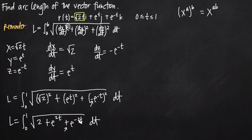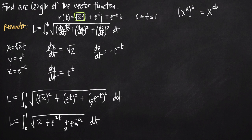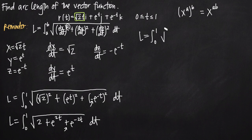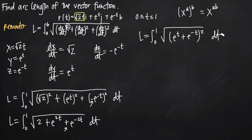Sometimes you can factor what's underneath the square root into a perfect square. In this case — though it may not look obvious — we can factor it. L equals the integral from 0 to 1 of the square root of e to the t plus e to the negative t, that whole thing squared, times dt. Let's foil that back out to confirm it.